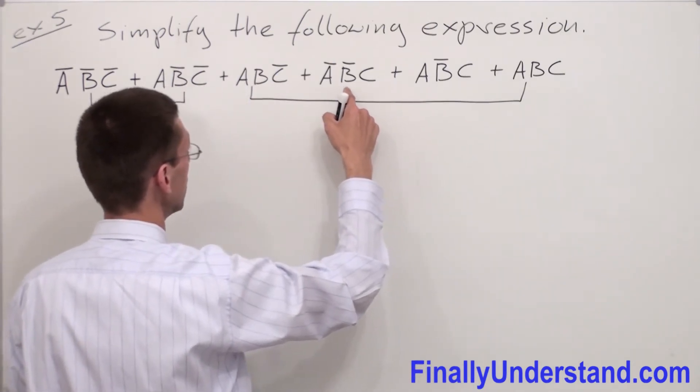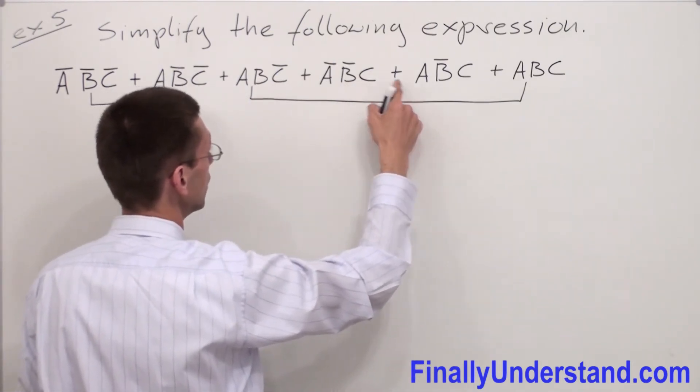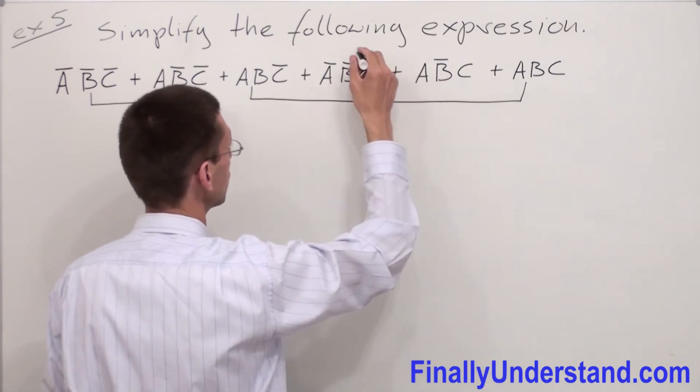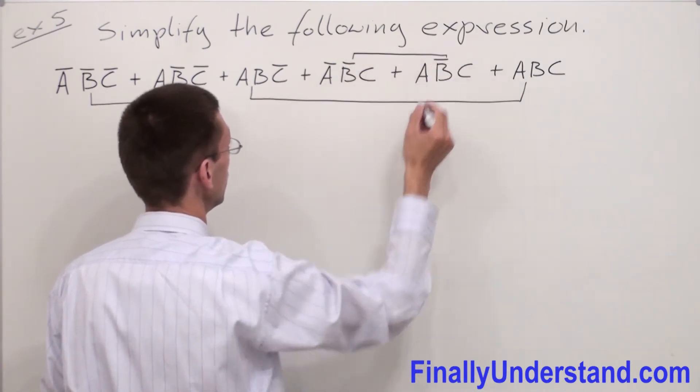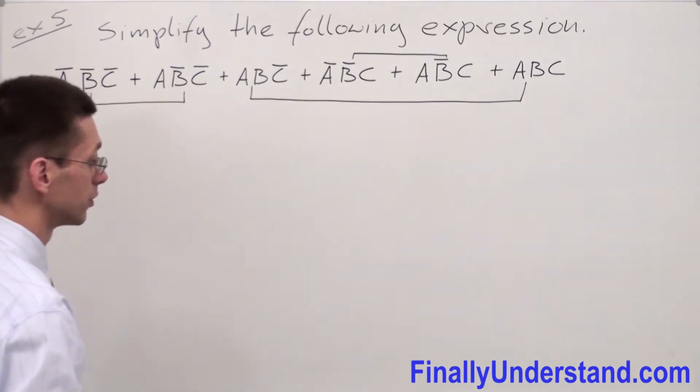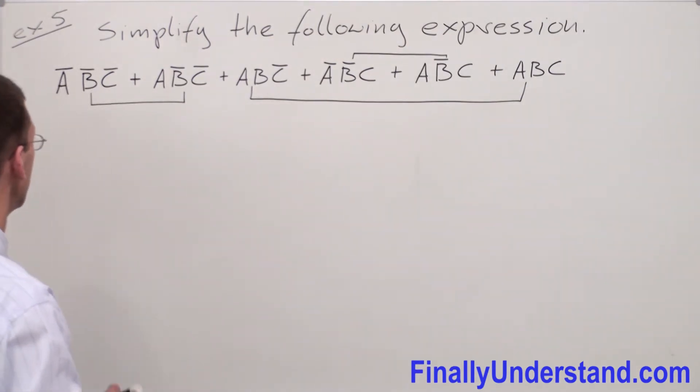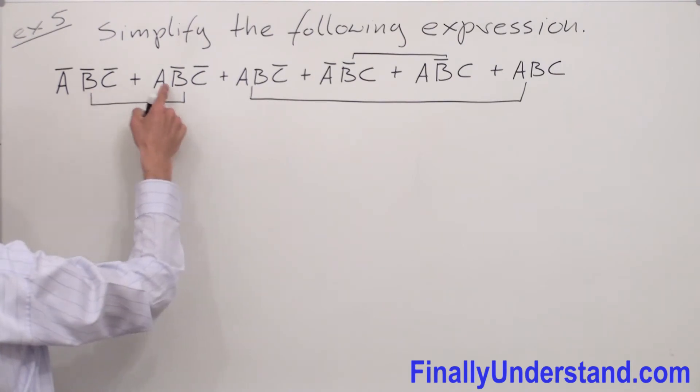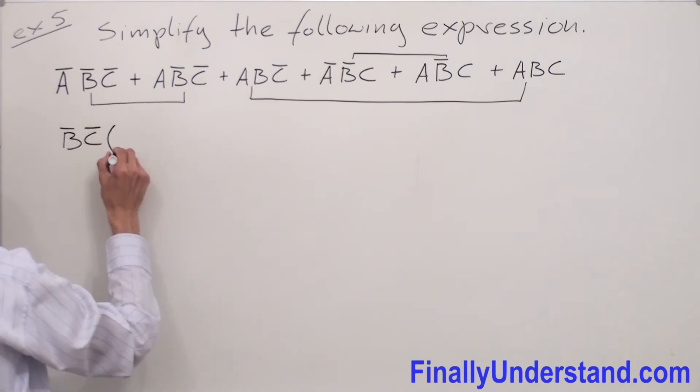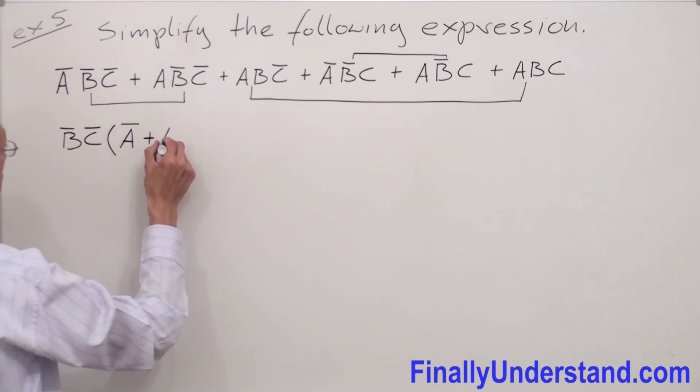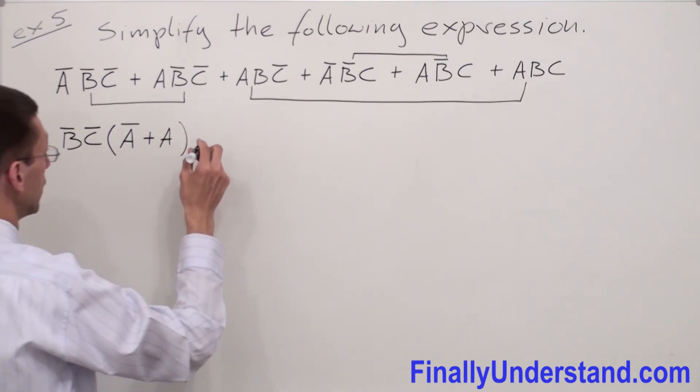Let's take a look over here. We have B̄ and we have C. We have B̄ and C. So we can factorize from these two terms B̄ and C. So let's pull out on the front of the parenthesis B̄C̄. Inside of the parenthesis I'm going to have Ā plus A. In other words, Ā or A.